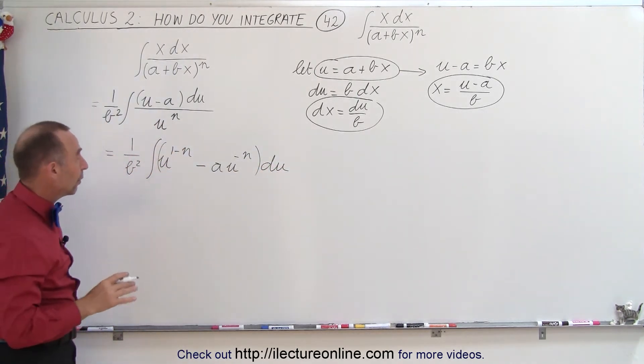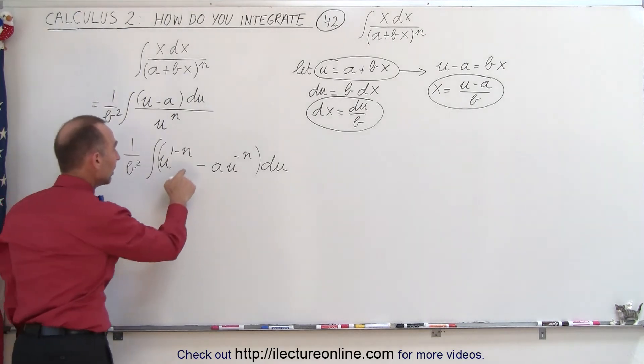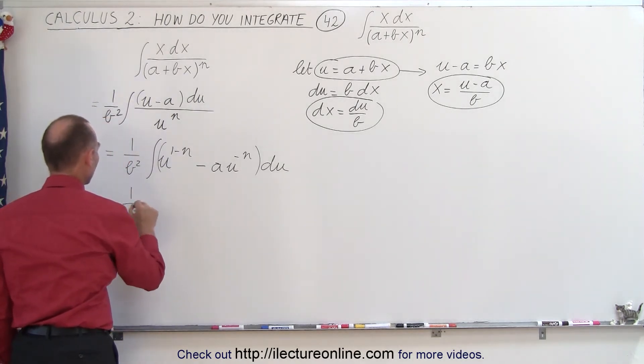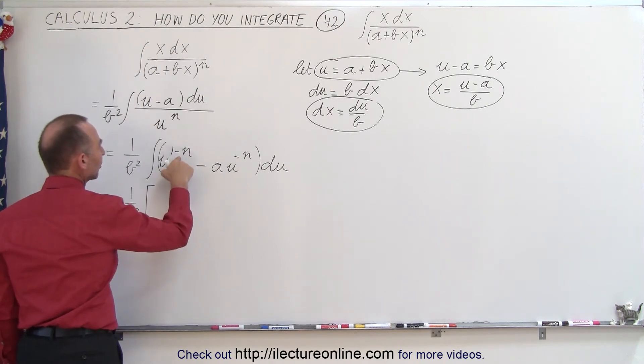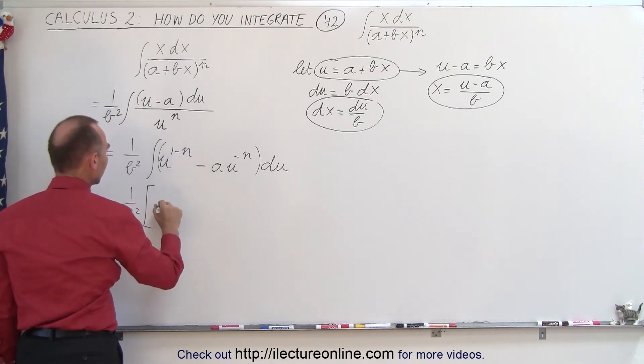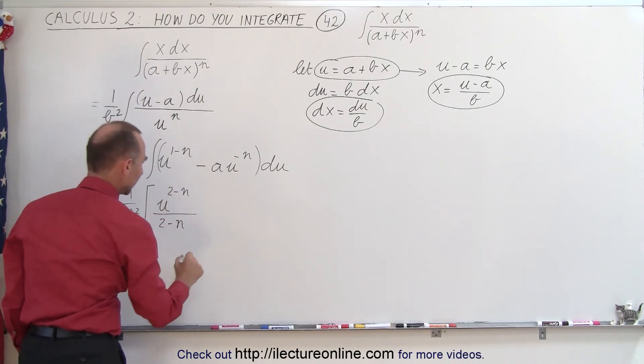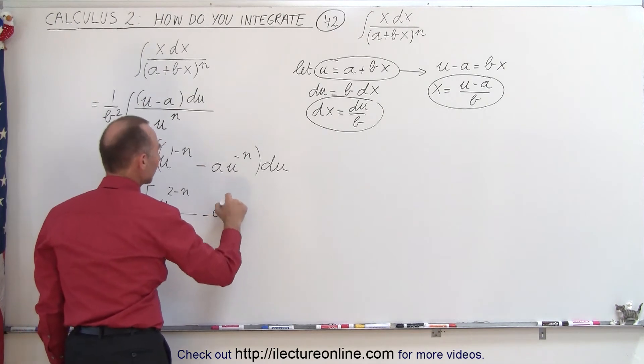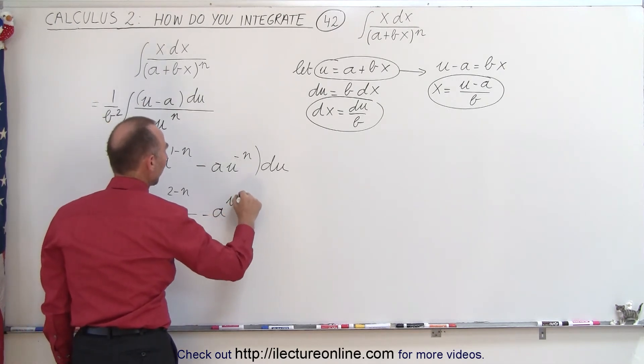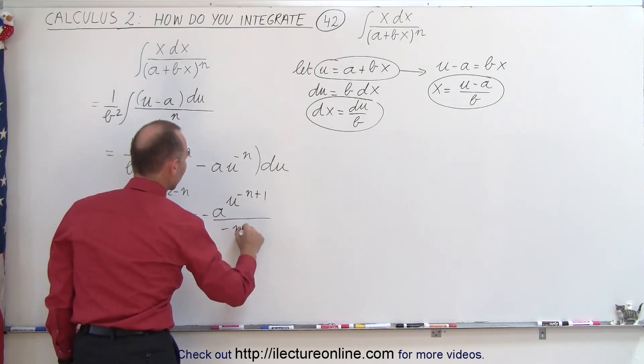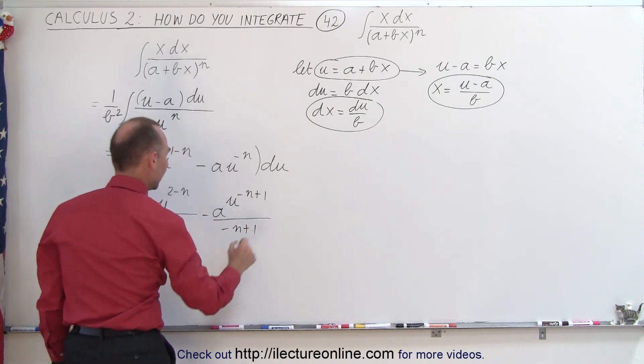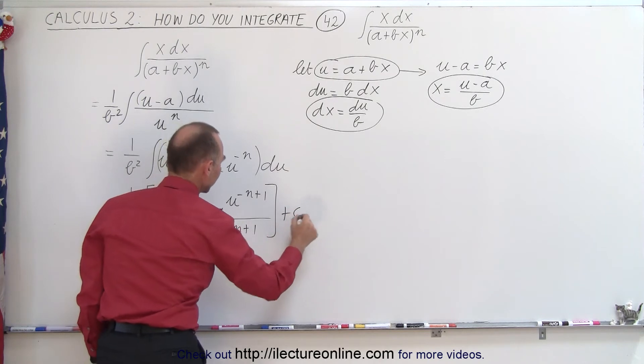Now we can integrate that rather quickly and very easily. This is equal to 1 over b squared times, all we have to do is add 1 to the exponent divided by the new exponent. So this becomes u to the 2 minus n divided by 2 minus n, minus a times u to the minus n plus 1 divided by minus n plus 1. And then we can add the constant of integration.